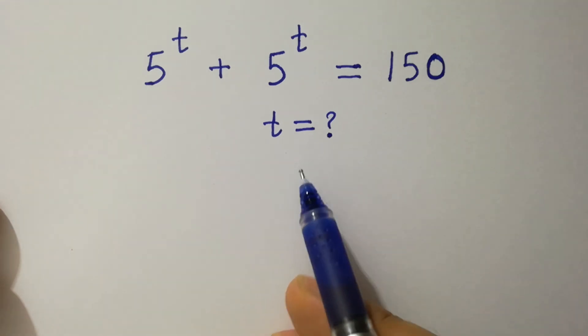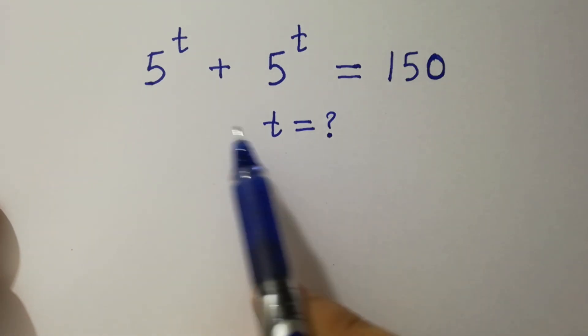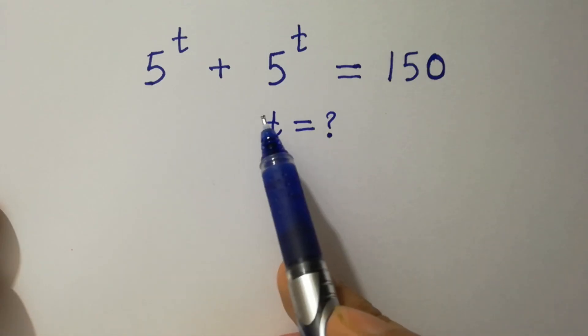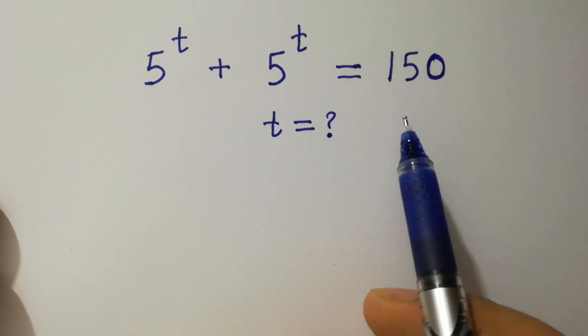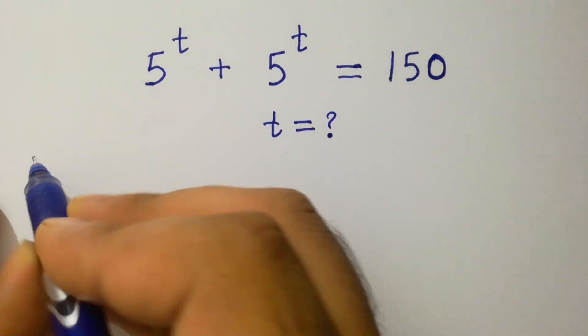Hello friends. Find the value of t if 5 to the power t plus 5 to the power t equals 150. Let's have a solution.